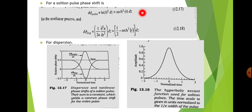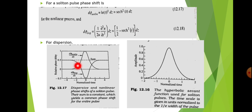These are the phase shifts associated with the soliton pulse when transmitted through a non-linear or dispersive medium. The corresponding waveform shows the relative phase delay versus normalized time — you can see the non-linear phase shift and the dispersive phase shift. Their sum is a constant, yielding a common phase shift for the entire pulse. The soliton pulse shape is the secant function, as shown by the dotted line.